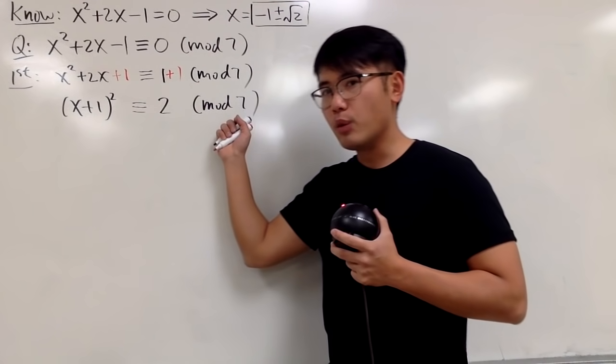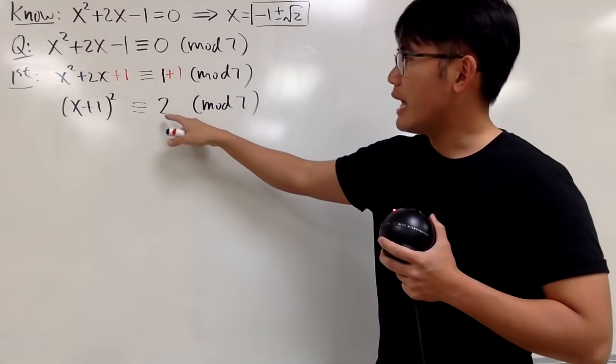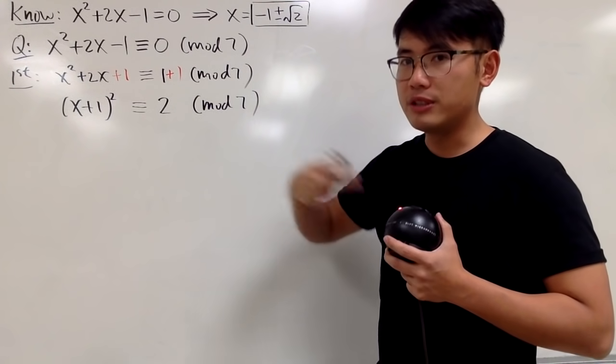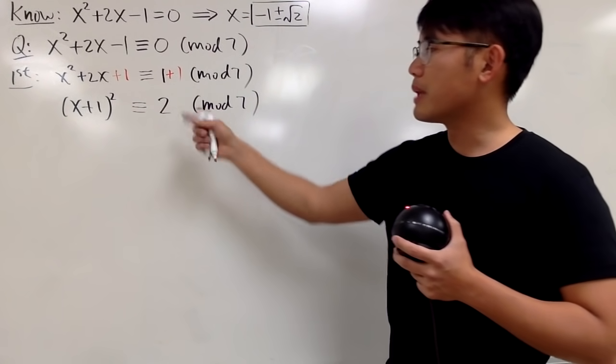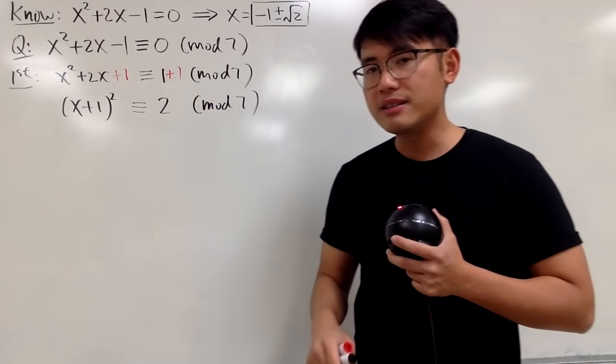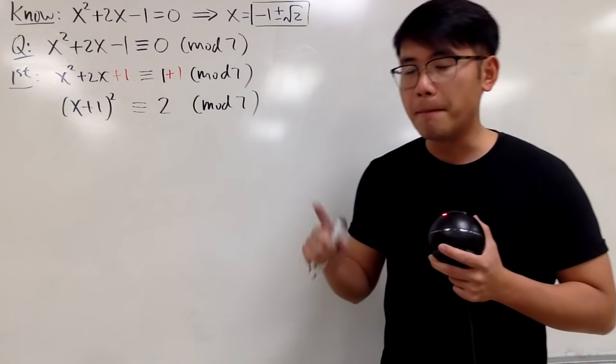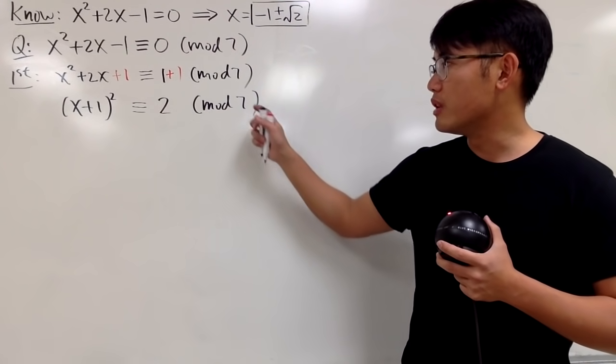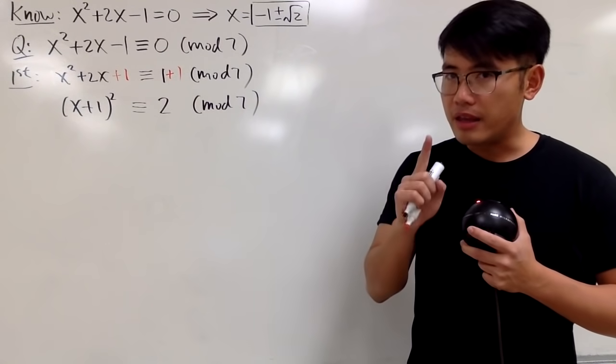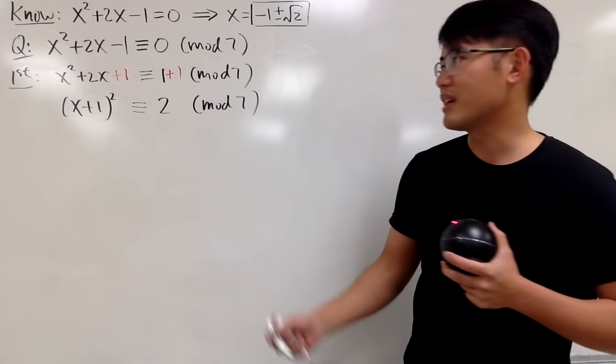But this is the first thing you have to be careful. In the mod 7 world, what you are going to do is, you can actually go from 2 and just keep adding 7. 2 plus 7 is 9. So the idea is that 2 is congruent to 9, mod 7. They have the same remainder when you divide them by 7. And 9 is a perfect square. That's what we like.